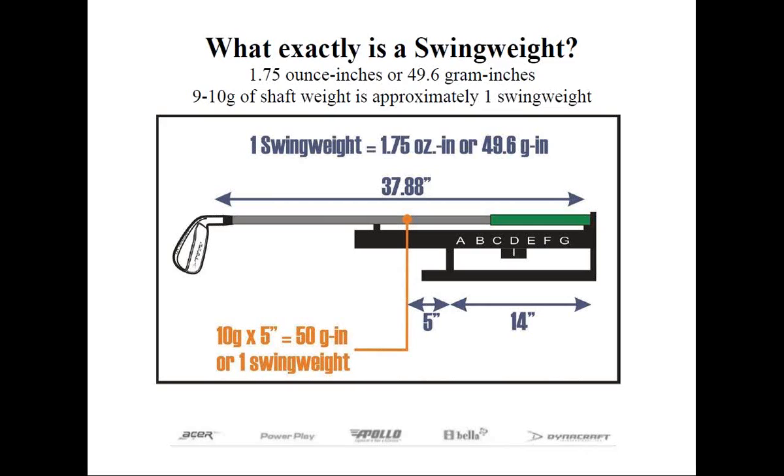But a good rule of thumb is for every 9 to 10 grams of shaft weight, it'll change the swing weight by one point. And this is the reason why normally when you go from a 75 gram shaft to a 65 gram shaft, the swing weight is lighter and not heavier.